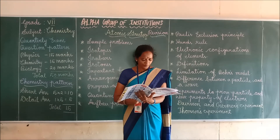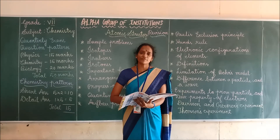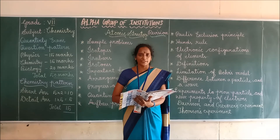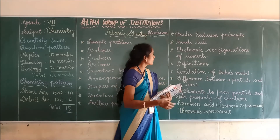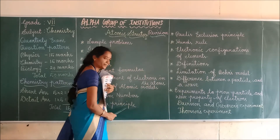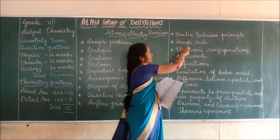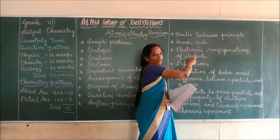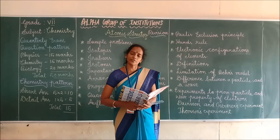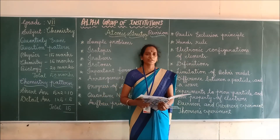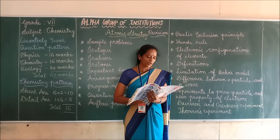Next, on the same page, rules for filling of orbitals. The three rules are: Aufbau principle, Pauli's exclusion principle, and Hund's rule. These rules are very important — you should learn all three.